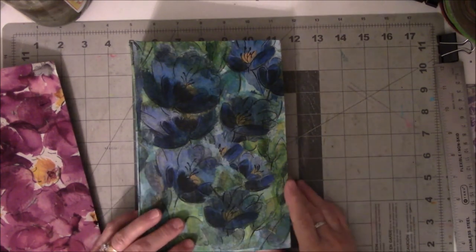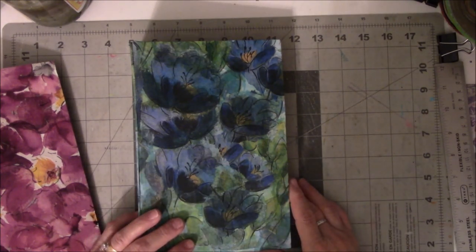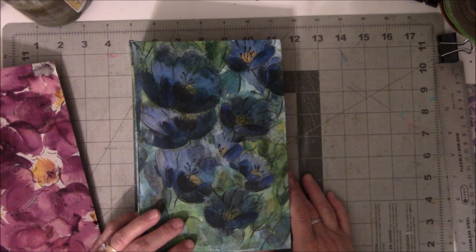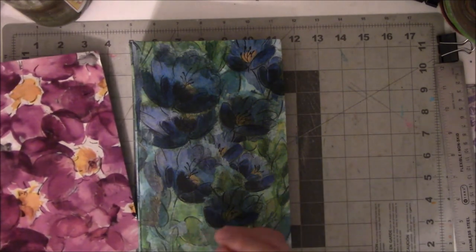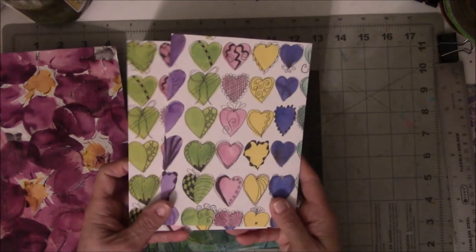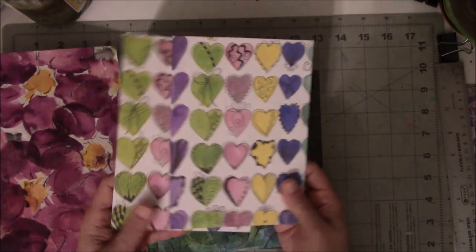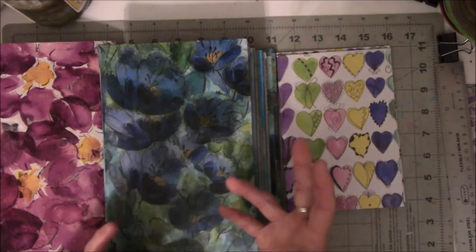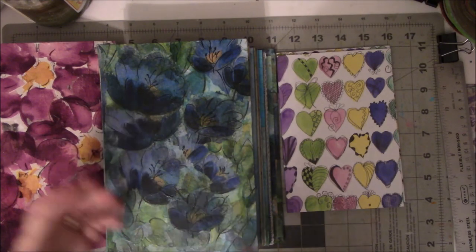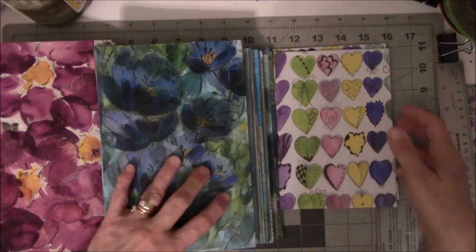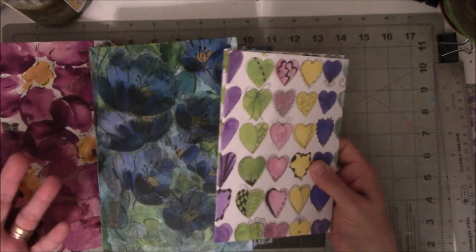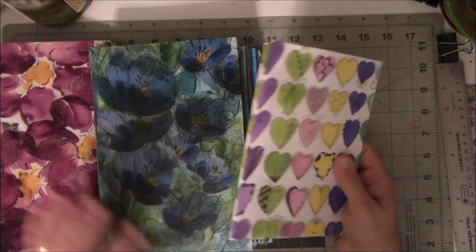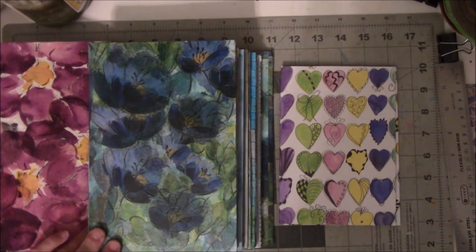The next video for the Etsy store will be the Coptic Stitch books that I am needing to purge out of my room. Because they're starting to take over. I think I've made close to 30. And, you know, I'm saying that as last night I printed off some of my own digipaper from my Etsy store and I'm making another book. I'm just a little weird that way. Okay. Anyway. The next video for the Etsy store will probably either be the Coptic Stitch books or demonstrating the stencils. Just come back and watch. Thanks, everybody. Bye.